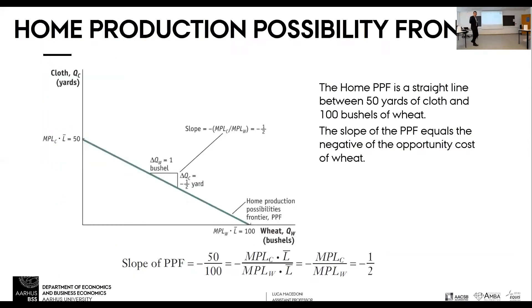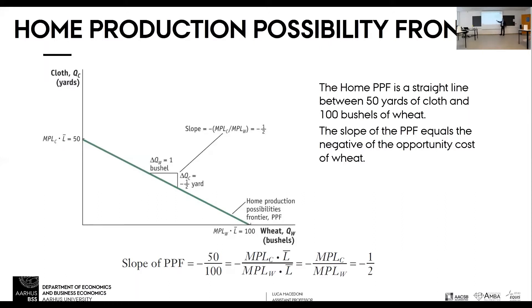What do we do with this information? What we're going to represent is what the home country can produce — called the production possibility frontier. The PPF represents all the combinations of wheat and cloth that the home country can produce efficiently, meaning when all workers are employed. It's a straight line because the marginal product of labor is constant. To draw it, we first look at the maximum amounts of cloth and wheat that can be produced, then trace a line.